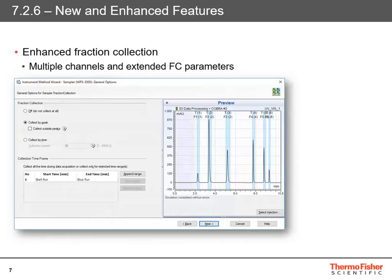The first new feature is enhanced fraction collection. We've extended fraction collection to cover multiple channels and more available parameters. This is the fraction collection wizard in Chameleon. On the right-hand side you see a preview — if there's an injection in the sequence already, as you go through the instrument method wizard, it will pick up that injection and preview what your fraction collection will look like. You can also use the button in the right-hand corner to select any chromatogram, and as you change the fraction collection settings, it will simulate exactly what the fraction collection is going to look like.